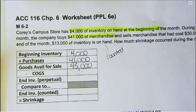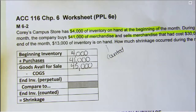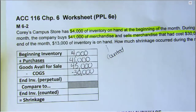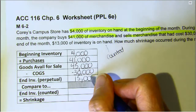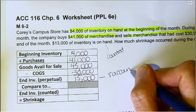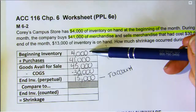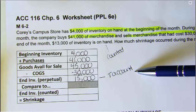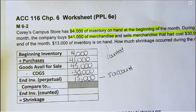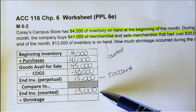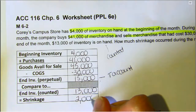Cory's Campus Store sells merchandise that cost $30,000. So if we take what's available to be sold and we subtract out what was sold, that leaves us with $15,000 of merchandise that should be in our inventory. That's what our perpetual record — our T-account — should indicate, because we would have debits of both $4,000 and $41,000 and a credit of $30,000, giving a balance of $15,000. However, at the end of the month only $13,000 of inventory is on hand based on a count. So we should have $15,000, we do have $13,000, therefore we've suffered an inventory shrinkage of $2,000.